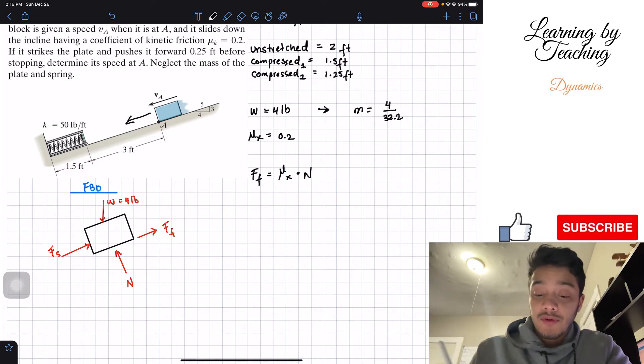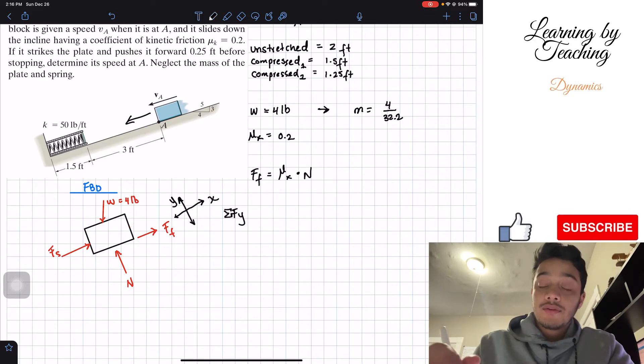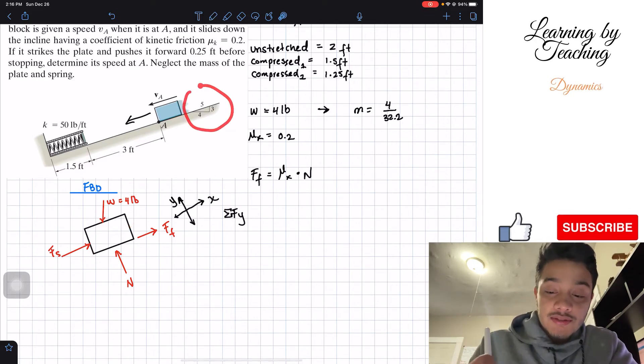So in order to solve for this normal force, what we first need to do is do a summation of forces. So summation of the forces in the y direction. Now what is the y direction in this diagram? So I'm going to assume that my coordinates go like this. This will be my x direction and this will be my y direction.